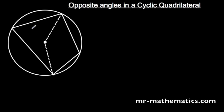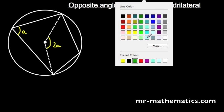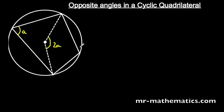Now we are going to label one angle at the circumference A, which means using that proof the angle at the centre would be 2A. We can use the same idea for the opposite angle at the circumference — let's call that one B, which means the angle at the centre would be 2B.